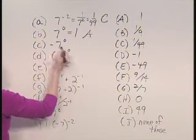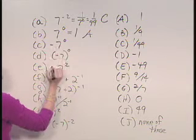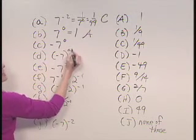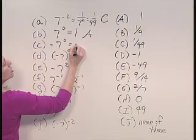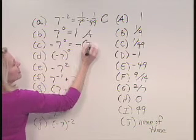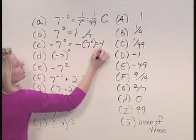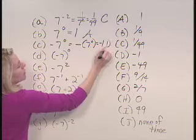For c, negative 7 raised to the 0 power, this is actually going to be equal to negative 7 raised to the 0 power, which is negative 1, and that would be selection d.